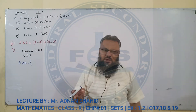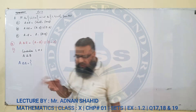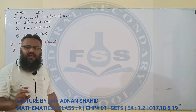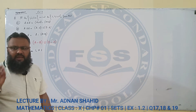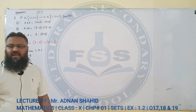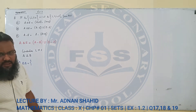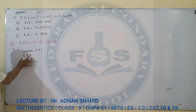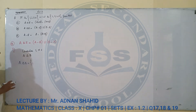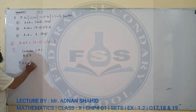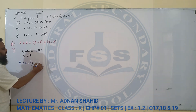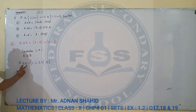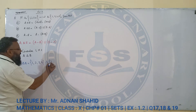उस lecture में मैंने union भी समझा था, intersection भी समझा था, difference भी समझा था, symmetric difference भी समझा था। वहाँ आखिर में मैंने आपको बताया था कि MCQs के लिए अगर symmetric difference निकालना हो तो कैसे निकालते हैं। तो वो तरीका यहाँ पर apply करेंगे left hand side में symmetric difference निकालने के लिए। Set A elements: 1, 2, 3, 4. Symmetric difference operator. Set B elements।